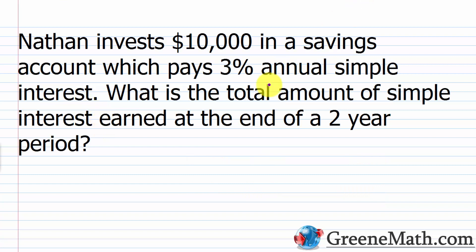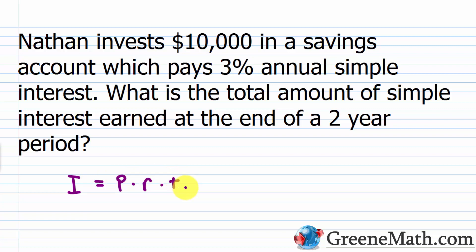Let's look at a simple example to get started. Nathan invests $10,000 in a savings account which pays 3% annual simple interest. What is the total amount of simple interest earned at the end of a two-year period? You can almost do this mentally: I = P × R × T, so $10,000 times 0.03 is $300 per year, and $300 times 2 is $600.